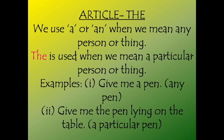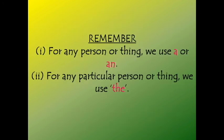In the first case, 'give me a pen' — it could be any pen. But in the second case, 'give me the pen lying on the table' — we are asking for the pen particularly lying on that table. So for any person or anything in general, we use a or an — the indefinite articles. Whereas for any particular person or particular thing, we use the, which is a definite article.